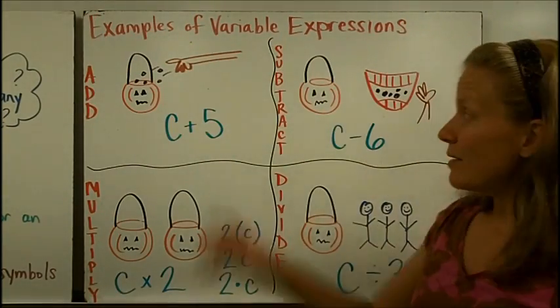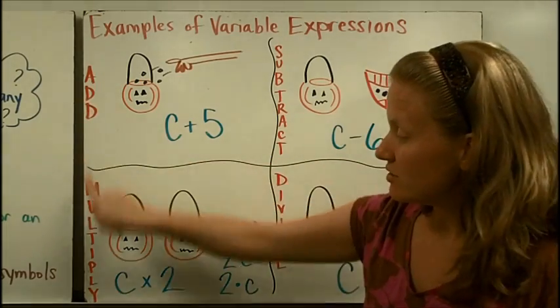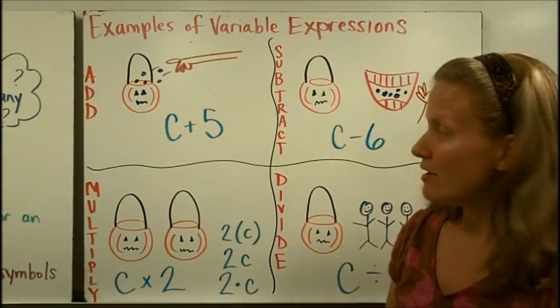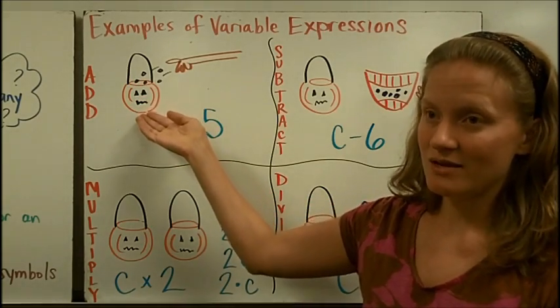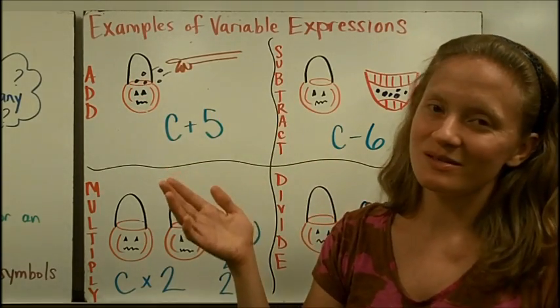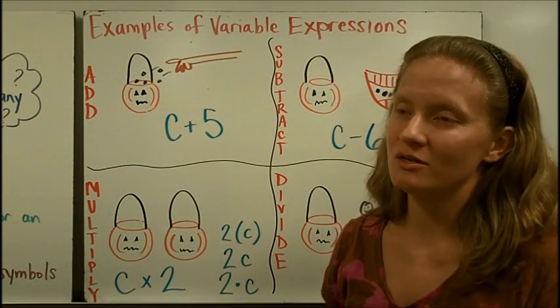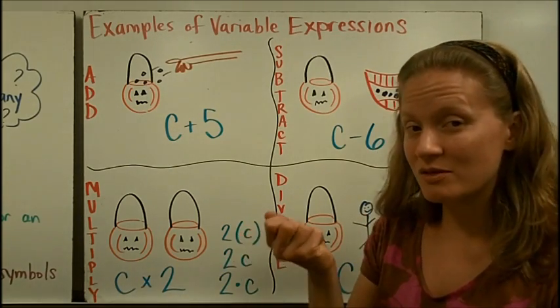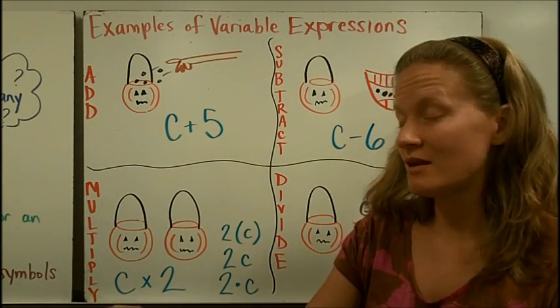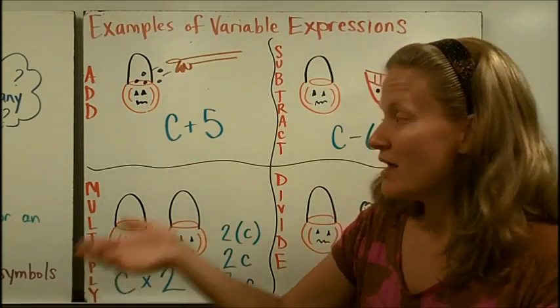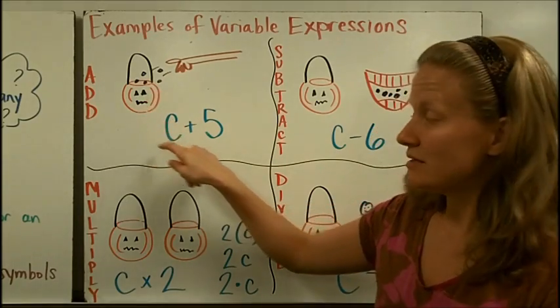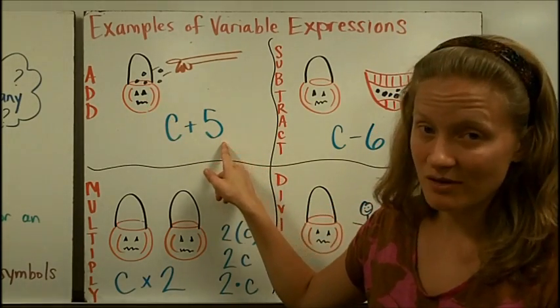Let's do a few examples of variable expressions with each of the operations. Let's pretend you have your unknown amount of candy and were walking home and decided there was one more house you wanted to go to. You saw that the person threw in five pieces of candy. If you started with C pieces and that person gave you five more, now the amount in your bucket is C plus five.